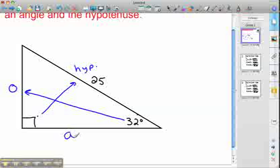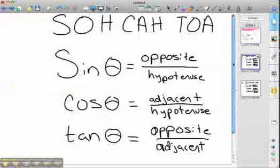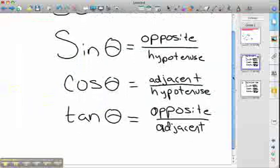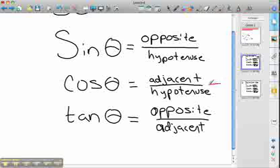So to start with, once you have that labeled, let's decide on a side to find. We're going to find A to start with. And we're given the hypotenuse. So we've got adjacent that we want to find and we're given hypotenuse. So the only one that deals with both of those is cosine. So we know we're going to be using cosine.